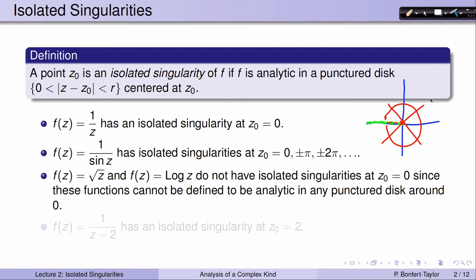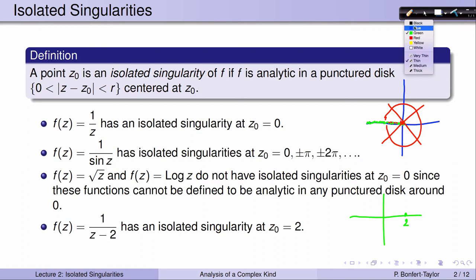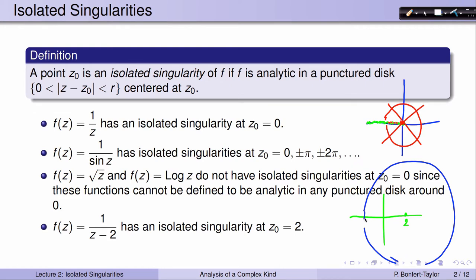The problem is much bigger at the origin. The function 1 over (z minus 2) again has an isolated singularity, and the isolated singularity this time is where the denominator is 0, and that's at z0 equals 2. So now I can draw any disk centered at 2, no matter how large, and the function is going to be analytic in that disk with the exception of 2.